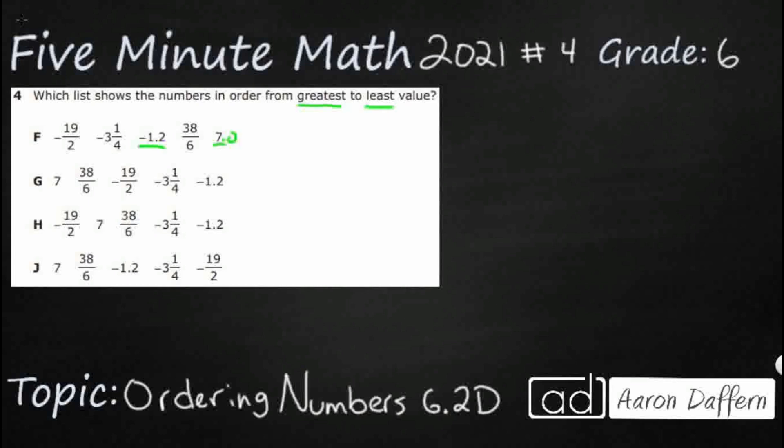So, we've got a mixed number, negative 3 and a quarter, and then we've got two improper fractions: negative 19 halves, and we've got 38 over 6, or 38 sixths. So, what we need to do is we need to get them all into the same form. And I think we're going to move them all into decimals. That's going to be the easiest.